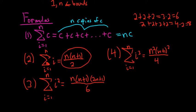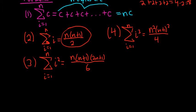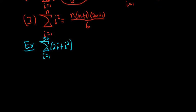Let's go ahead and do a simple example of using these formulas. Let's compute the sum as i runs from 1 to 50 of 2i plus i squared. So to do this sum, what we typically do is we break it up. Properties of sums say we can break it up.